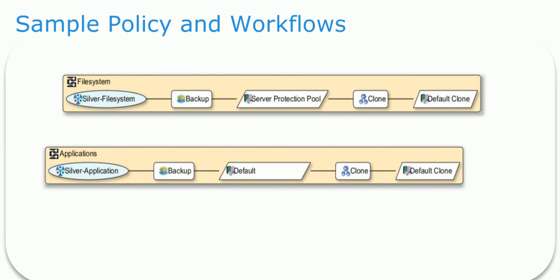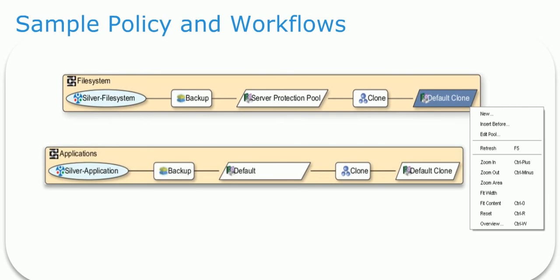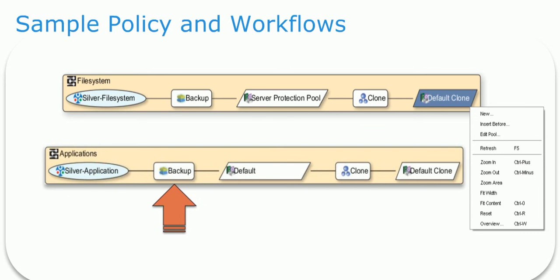Here is a visual representation of the default Silver policy. It consists of two workflows: File system and application. Each object in the workflow represents a resource which can be modified from this view by right-clicking on the object. The application's workflow consists of multiple default actions and pools. Silver application represents the group where a user can add and remove clients. Backup is the action, where a user can use the action wizard to specify options such as the backup schedule and storage node.